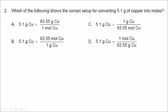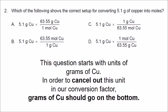Number 2 is a multiple-choice question: which of the following shows the correct setup for converting 5.1 grams of copper into moles? This question starts with units of grams of copper. In order to set up a conversion factor where we can cancel out the units of grams of copper, grams of copper should go on the bottom. Since in choices A and C the units on the bottom are moles, we can already eliminate those choices.